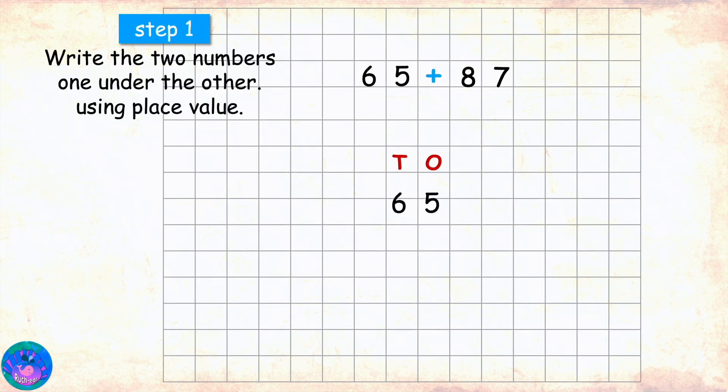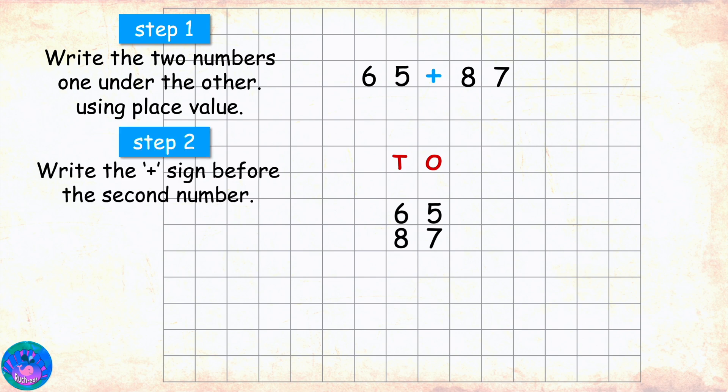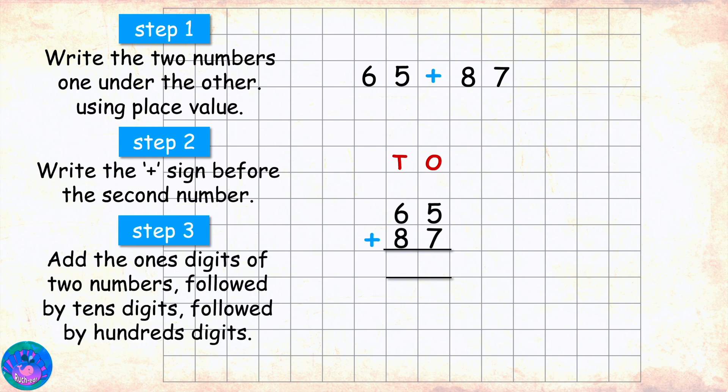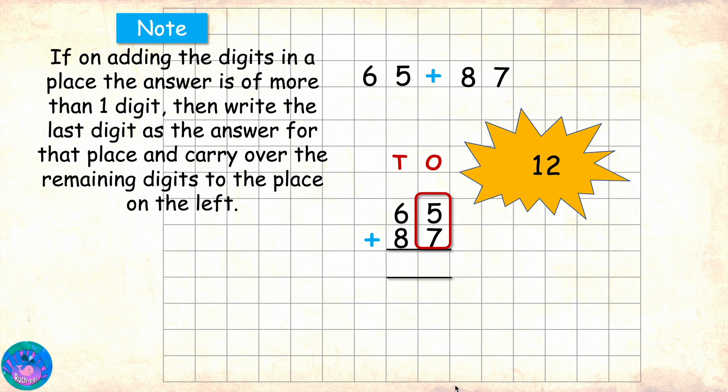Step 1. We write the numbers one under the other using the place value. Step 2. We put the plus sign before the second number and mark the area for the answer. And starting with the ones place, we have 5 and 7. 5 plus 7 is 12. Correct. And 12 is a two-digit number. So, following the rule, we will write the last digit 2 as the answer for the ones place and carry over the remaining digit 1 to the tens place.